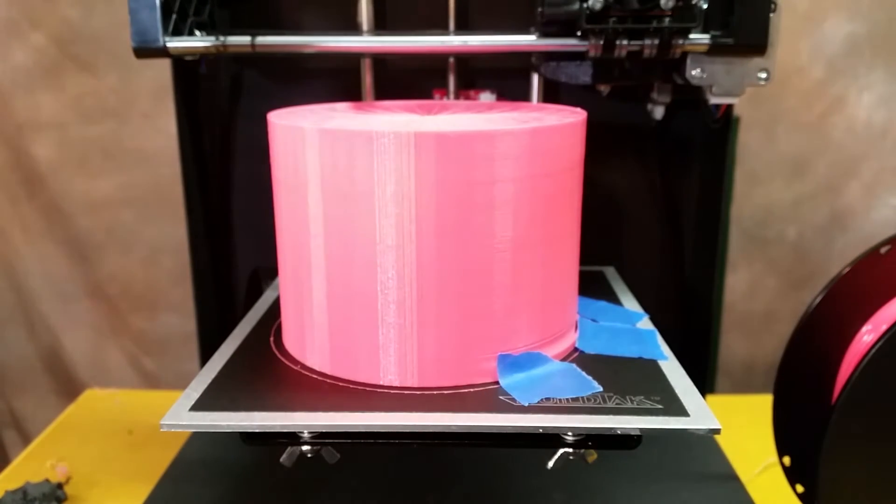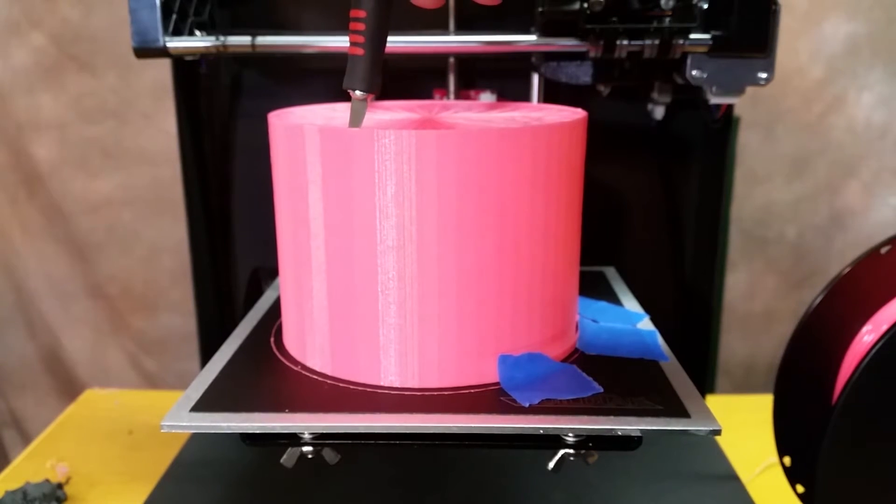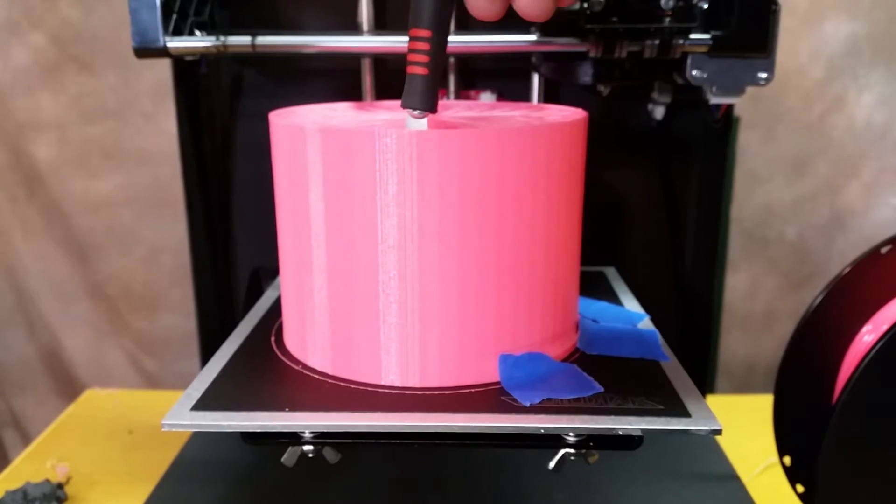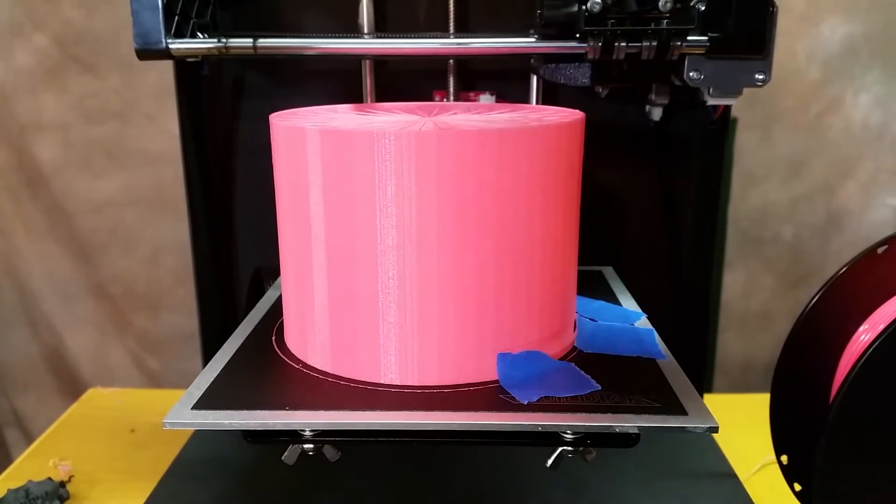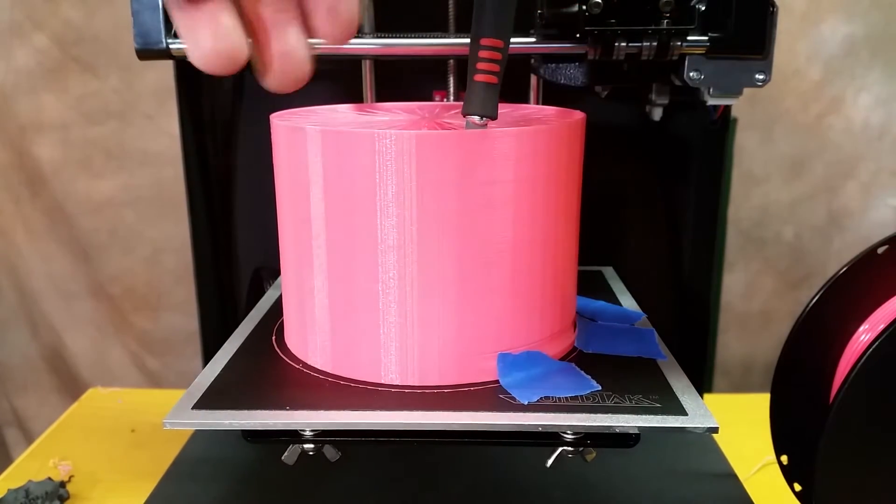Okay guys, so this once again is the troll that was printed using Simplify 3D. I did have some lifting issues at the base. It started kind of lifting at the back corner. So that's why I had just taped it down to be on the safe side.